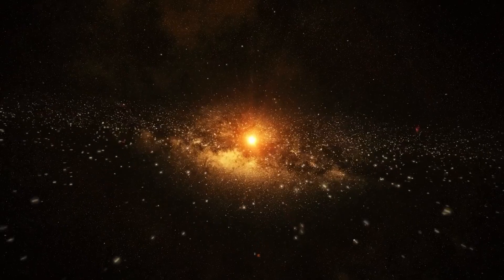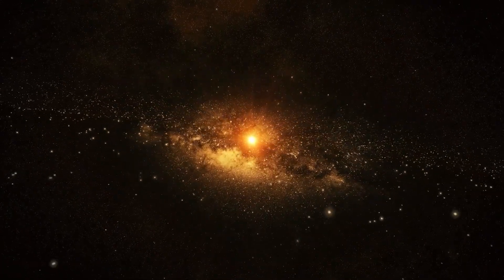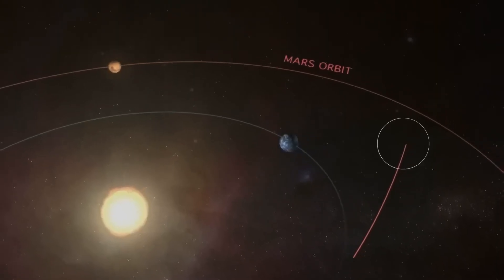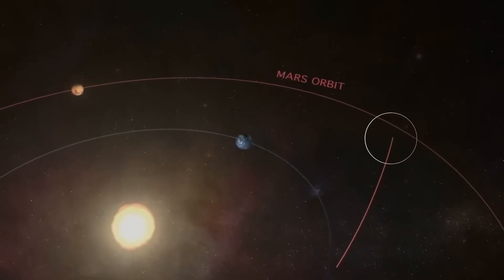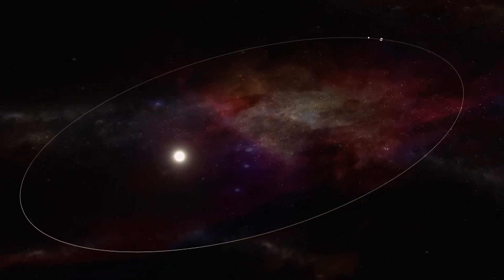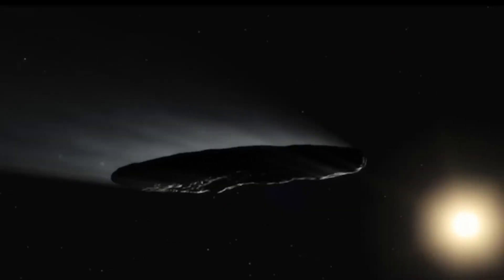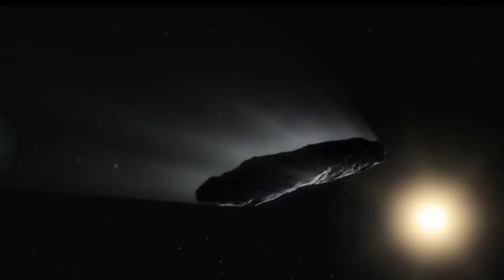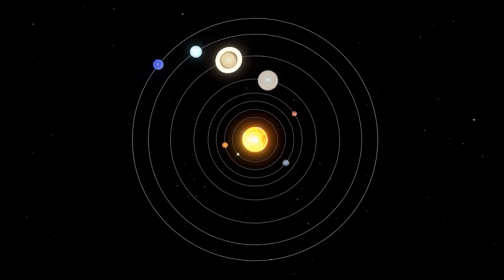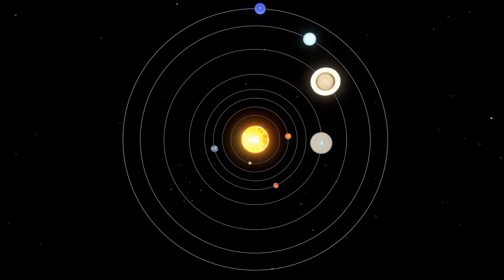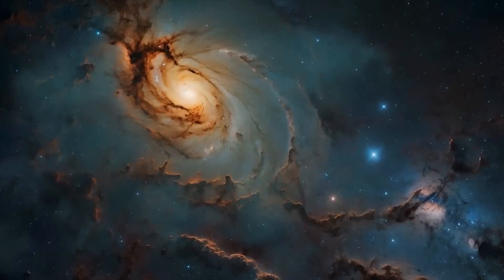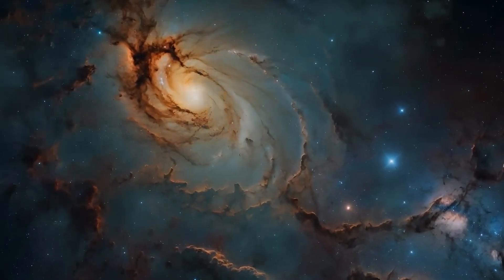At its simplest, it comes down to framing. From one side, 3i Atlas is a comet that just happens to be unusual. From the other side, 3i Atlas is a series of low-probability events bundled into a single object: a near-perfect plane crossing, improbably pristine ices, and a power output that seems excessive for cold rock. Both views rest on real data. One leans on the stability of known science, the other on statistical oddities that may point to something manufactured.